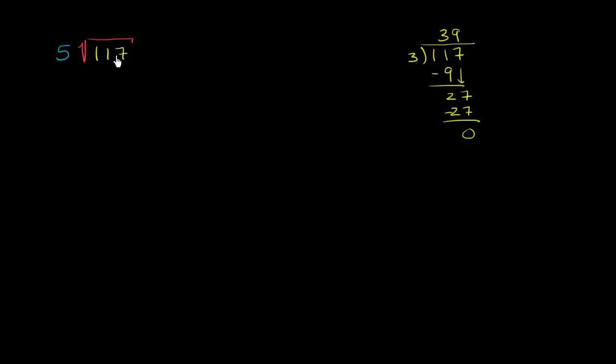And so we can factor 117 as 3 times 39. Now 39 we can factor as, that jumps out more at us, that's divisible by 3. That's equivalent to 3 times 13.